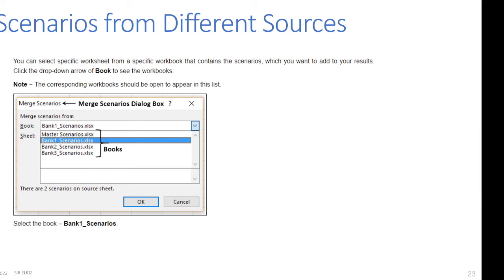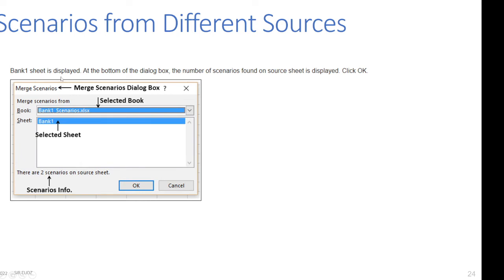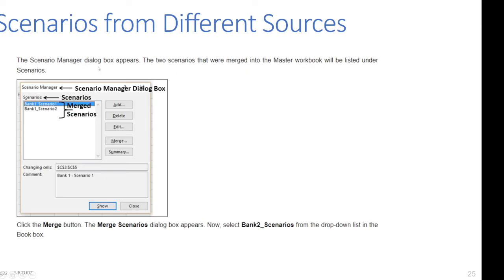From the Book drop-down, select 'Bank One Scenarios'. The Bank One sheet is displayed at the bottom of the dialog box, and the number of scenarios found on the source sheet is shown — there are two scenarios on this sheet. Click OK. The Scenario Manager dialog box appears and the two scenarios merged from Bank One are listed under Scenarios: Bank One Scenario 1 and Bank One Scenario 2.